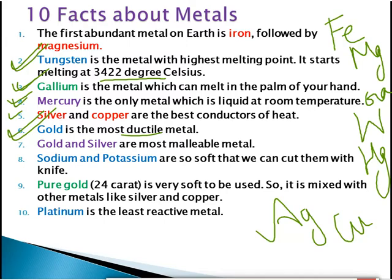Gold and silver are also the most malleable metals. Malleability is the property of a metal by which it can be beaten into thin sheets.